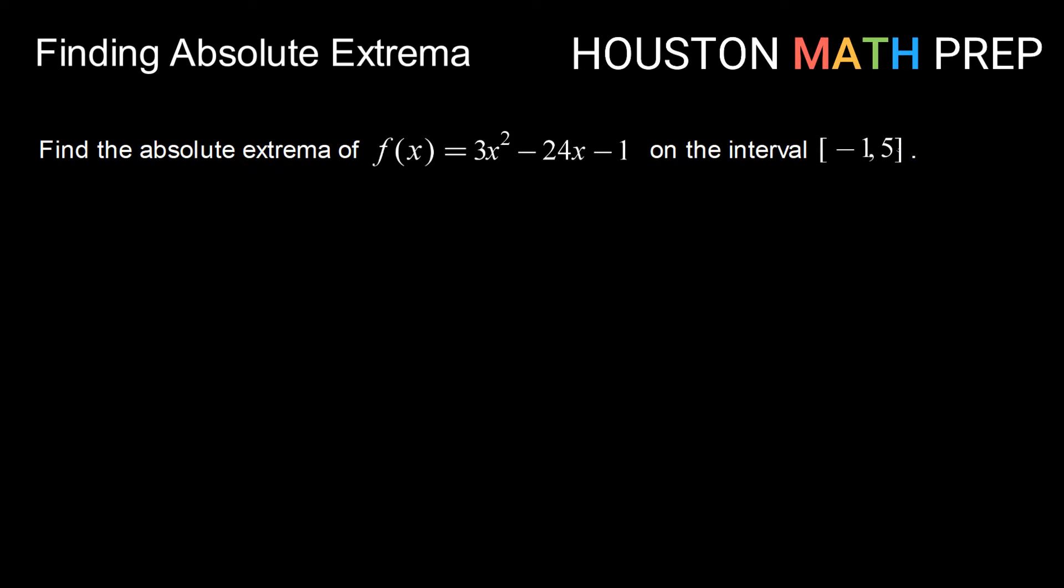first we want to double check that the extreme value theorem applies. We want to make sure that we believe this f(x) is continuous on this closed interval. Well in this case, f(x) is a polynomial function. And a polynomial function is continuous over the entire real line, so certainly it is continuous over this interval.